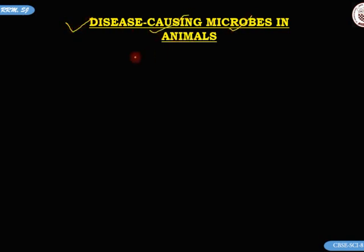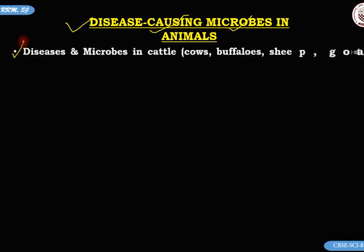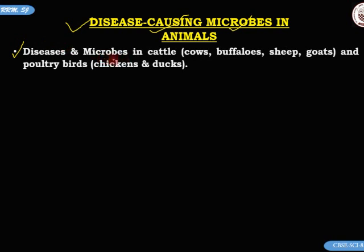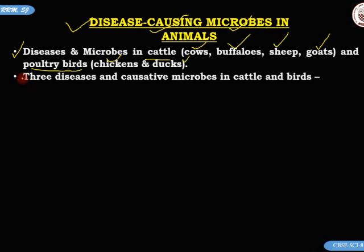Good morning class. In this video we shall study about the disease-causing microbes or microorganisms in animals, and in a special way we shall discuss the diseases and microorganisms that cause diseases in cattle — that is cows, buffalo, sheep, goats — and poultry birds such as chickens and ducks. There are three important diseases given in our textbooks to study, along with their causative microbes.